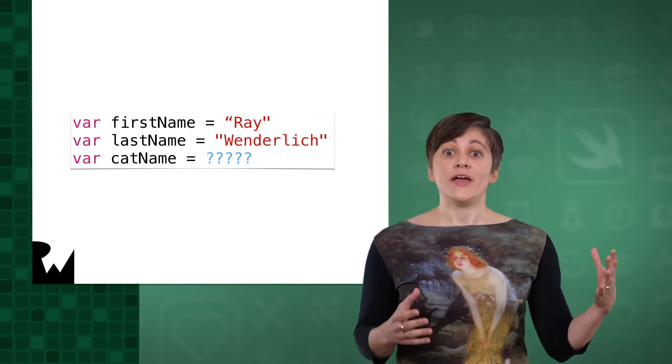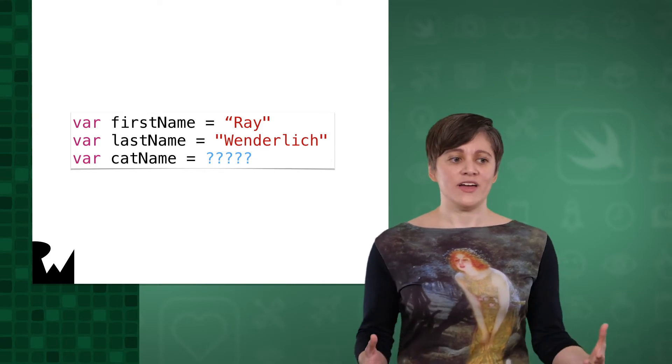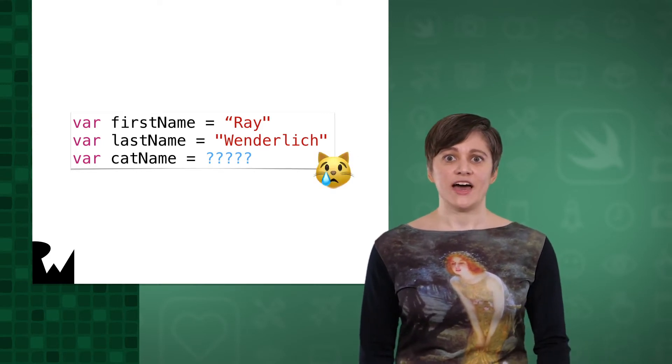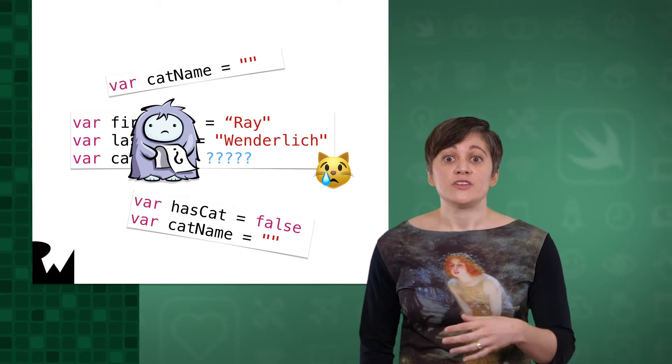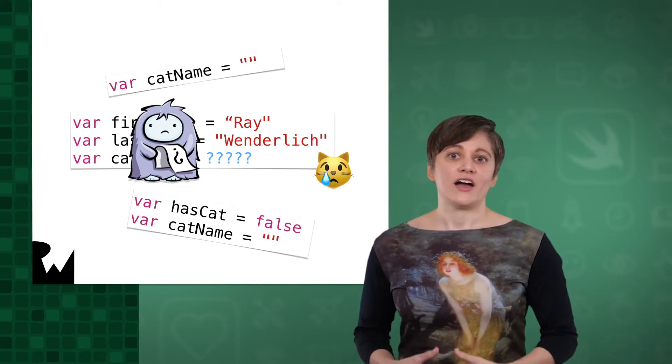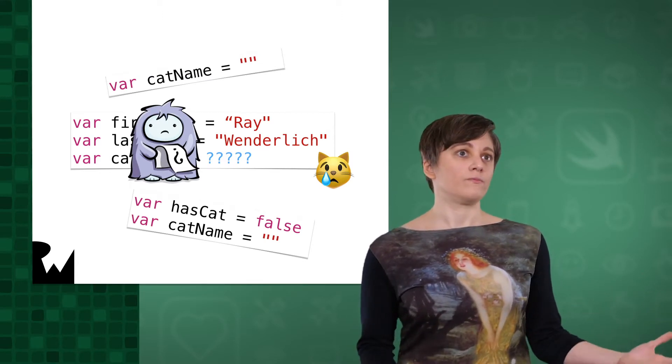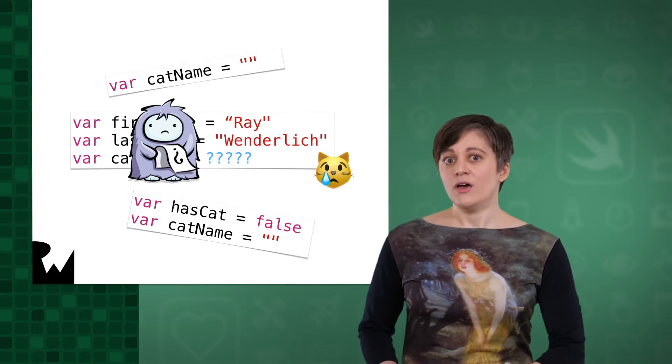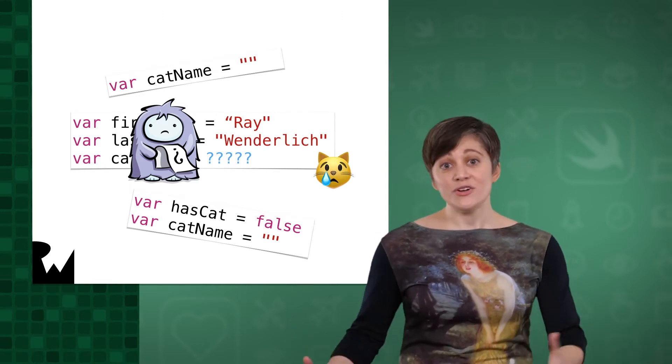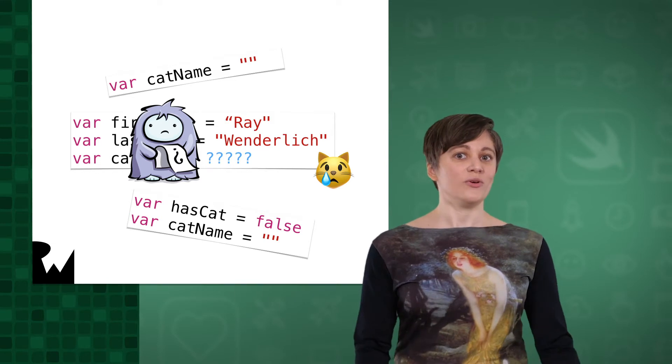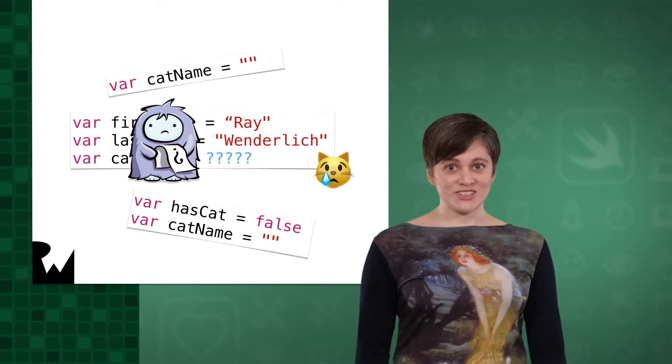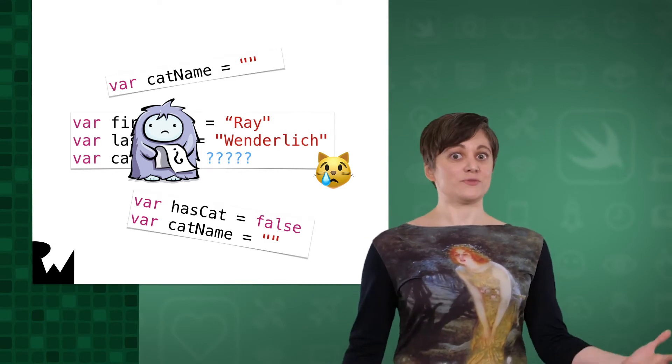What are we gonna do? We need a way to model the concept that Ray doesn't have a cat. This is really sad. You might think to do something like use a boolean to track if someone has a cat or not, or use an empty string for the cat's name. There are lots of ways you could model this yourself, but you don't have to. Swift has a great solution for this, and it's called Optionals.